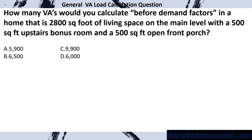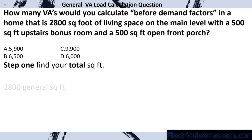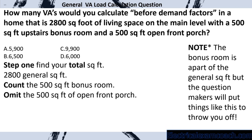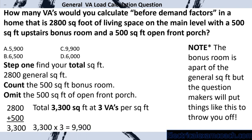How many VAs would you calculate before demand factors in a home with 2,800 square feet of living space on the main level, a 500 square foot upstairs bonus room, and 500 square feet of open front porch? First, total the square feet. We count the 2,800 general. We count the 500 square foot bonus room — note that question makers will put things like this in your test to throw you off. We omit the open front porch. That gives us 3,300. We take 3,300 multiplied by 3 VAs per square foot, and we select C.